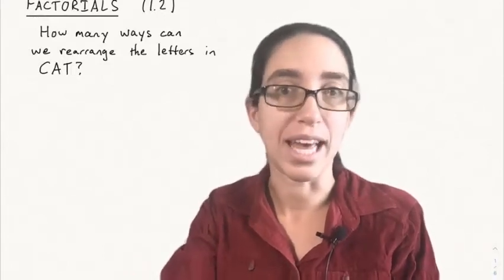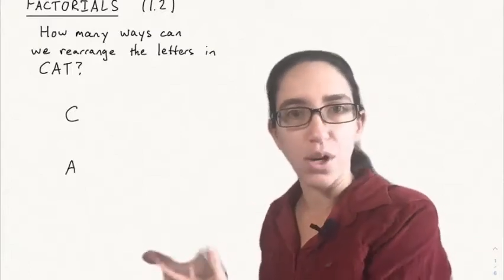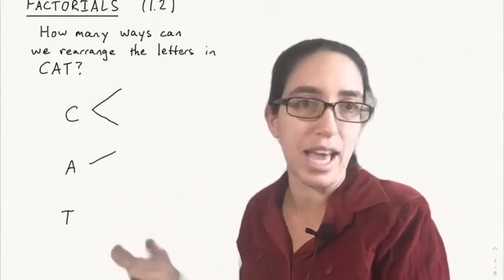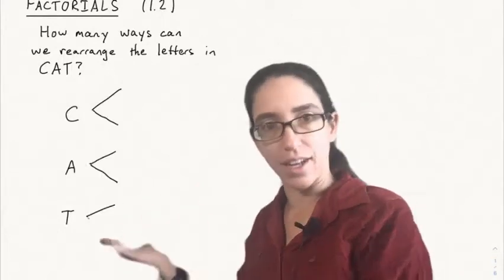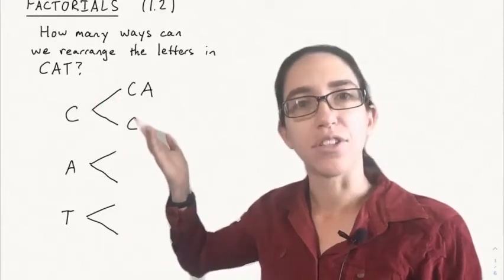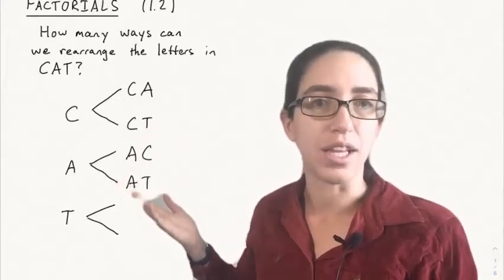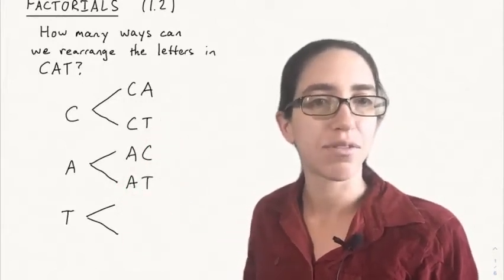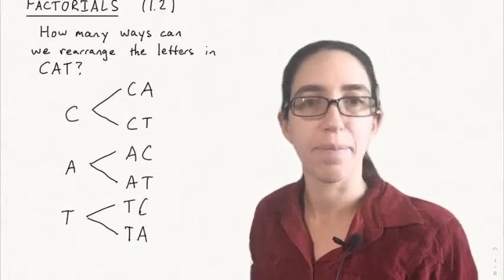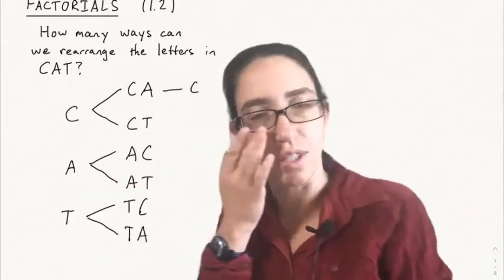Some people would call this forming an anagram of the letters in cat. Let's start by figuring out what the first letter might be. There are three ways of choosing the first letter: you can either start with C, A, or T. Once you choose that letter, there are more possibilities for what can come after it. After C, you can follow up with A or T — two possibilities. After A, you can follow up with C or T. And after T, you can follow up with either C or A. So there are two possibilities for each first letter as to what the second letter is going to be.